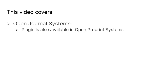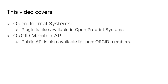Please note that this video will focus on Open Journal Systems and how to set up and use the plugin in OJS. The plugin is also available in PKP's Open Preprint Systems, and it works in much the same way. The video also discusses the member API, which is available to ORCID member organizations. Journals from non-member organizations are invited to use the public API, which functions in a similar way. For more information, please visit the ORCID plugin guide in the PKP documentation.